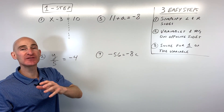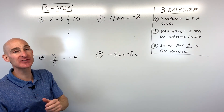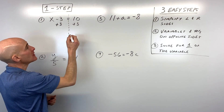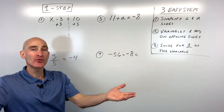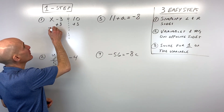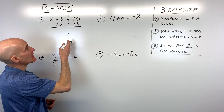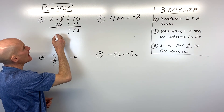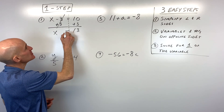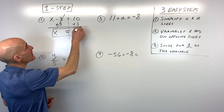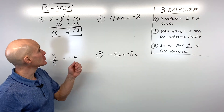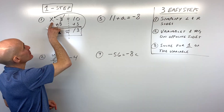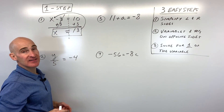We want the variables and numbers on opposite sides. To get rid of the negative 3 we do the opposite operation — subtraction and addition are opposites. So instead of subtracting 3 we add 3 to both sides to keep it balanced. Negative 3 plus 3 cancels to zero, and 10 plus 3 is 13, so we get x equals 13. To check, plug it back in: 13 minus 3 equals 10. Correct.